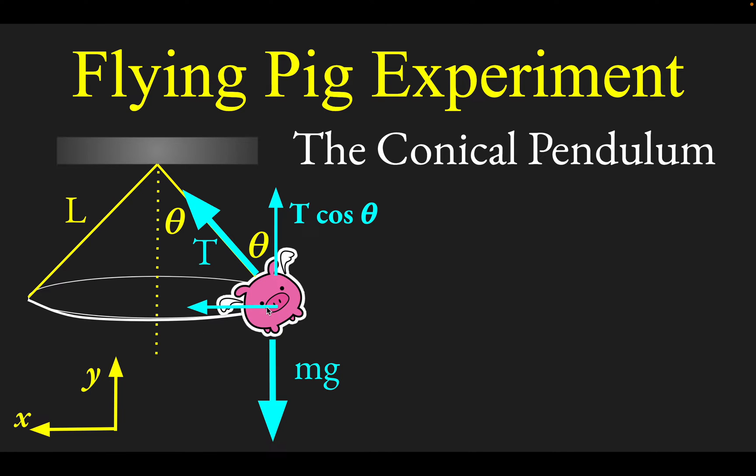Likewise, your horizontal component is going to be T sin θ. That would be like projecting the tension onto the opposite side of the known angle.